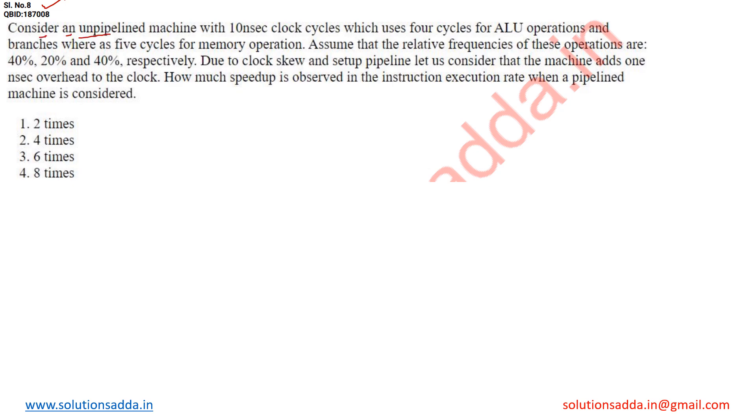Consider an unpipelined machine with 10 nanosecond clock cycles which uses 4 cycles for ALU operations. Let's write this down: for ALU operation in an unpipelined machine, 4 cycles.